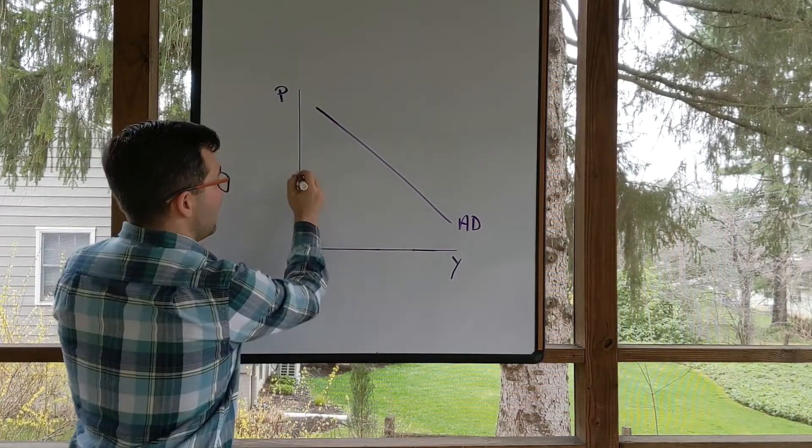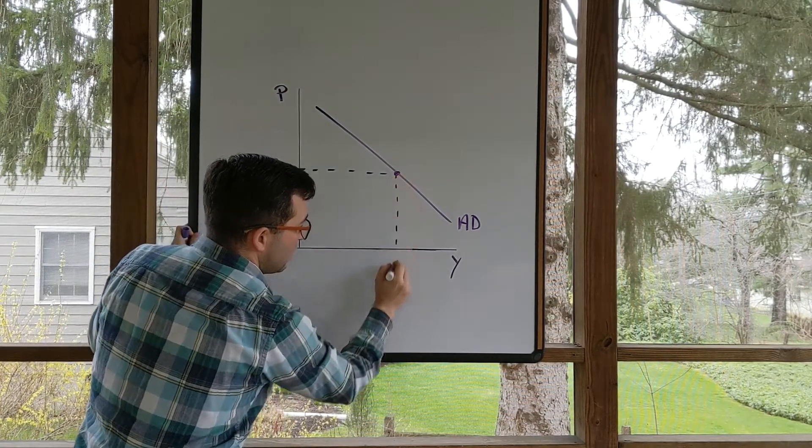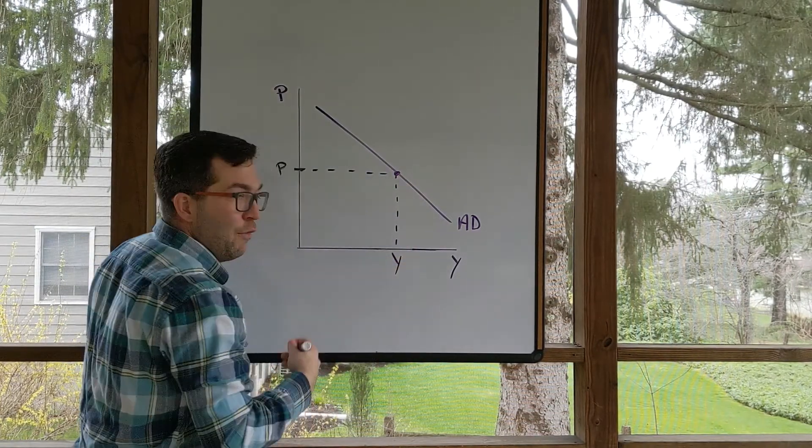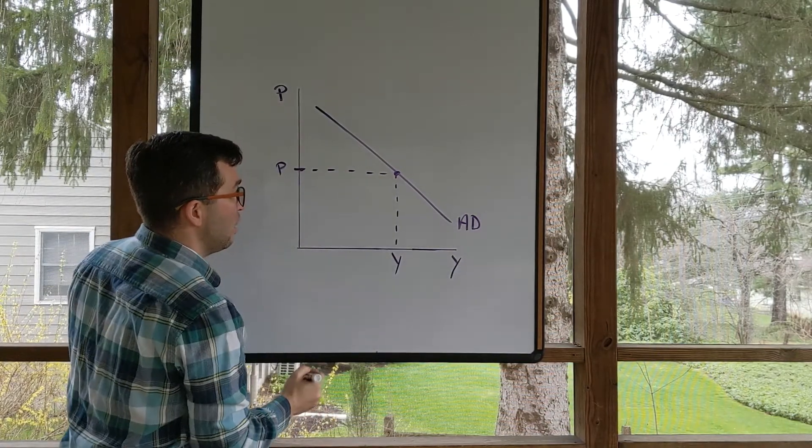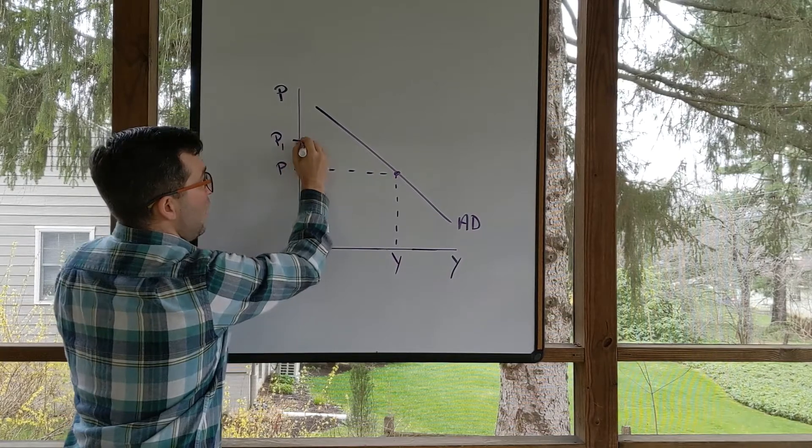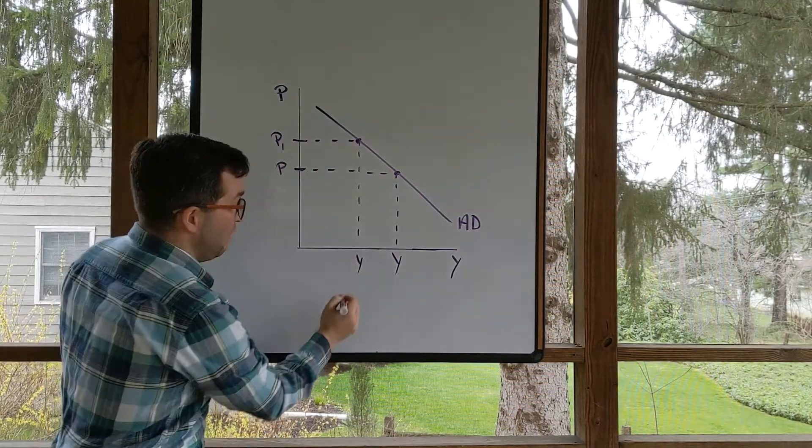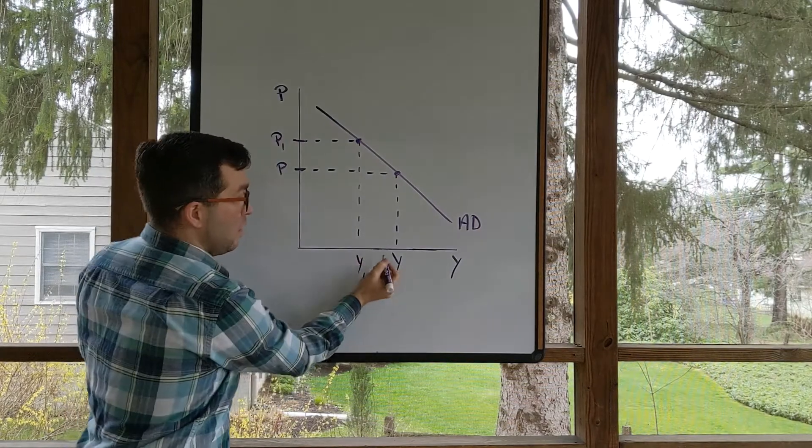What this is telling us is we have some sort of price level that's always going to be associated with a level of real GDP. The price level might change. Maybe the price level goes up. Let's call this price level one. It's going to be associated with a different level of real GDP. This is a movement along.